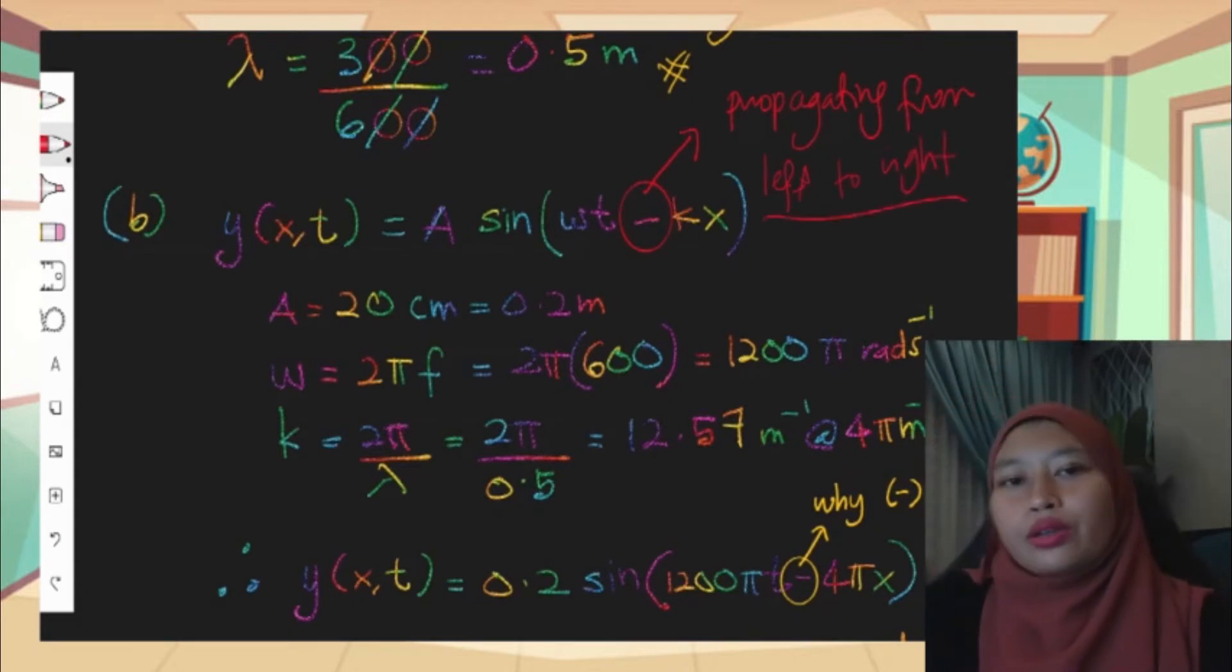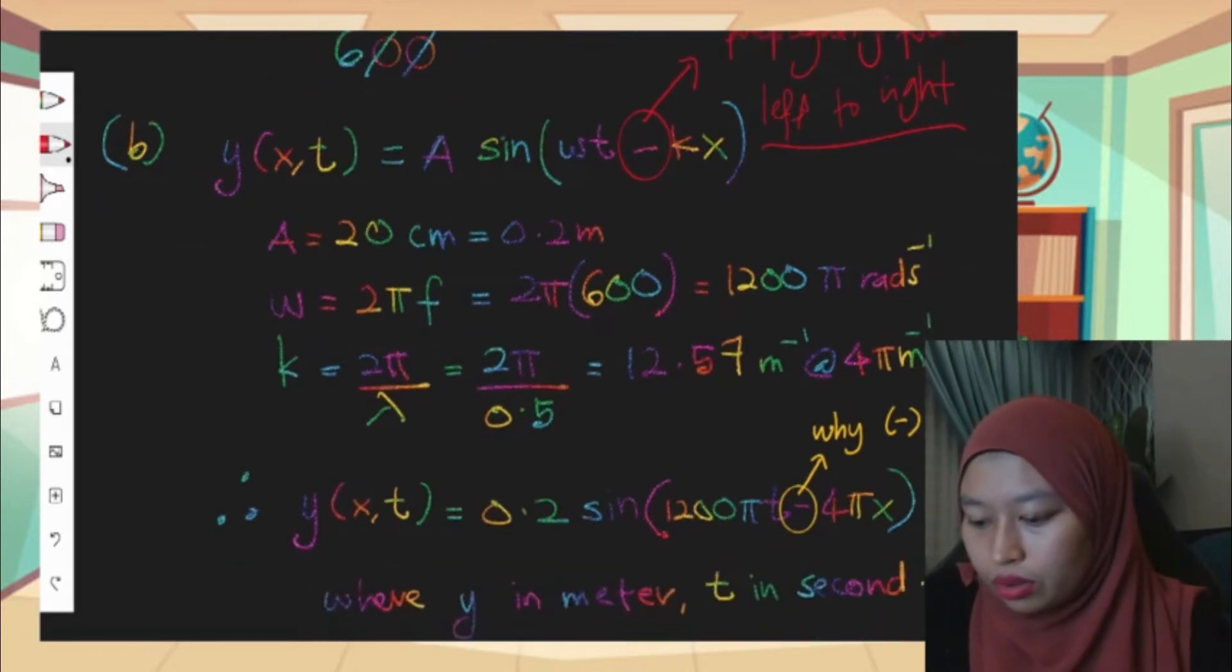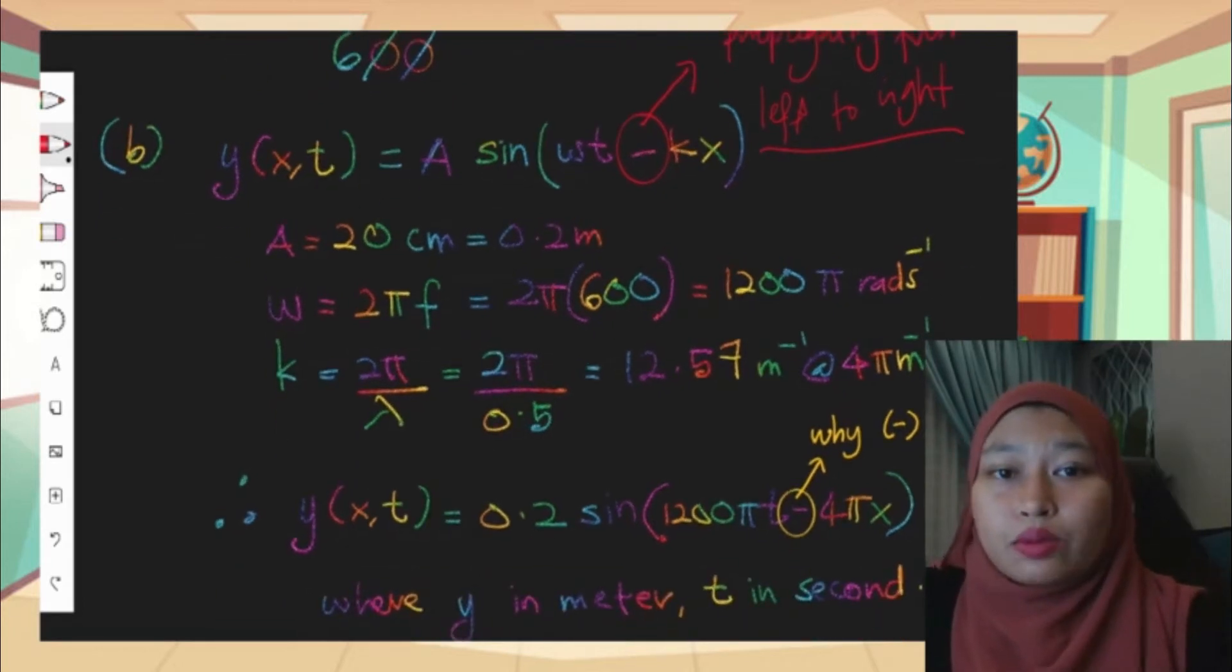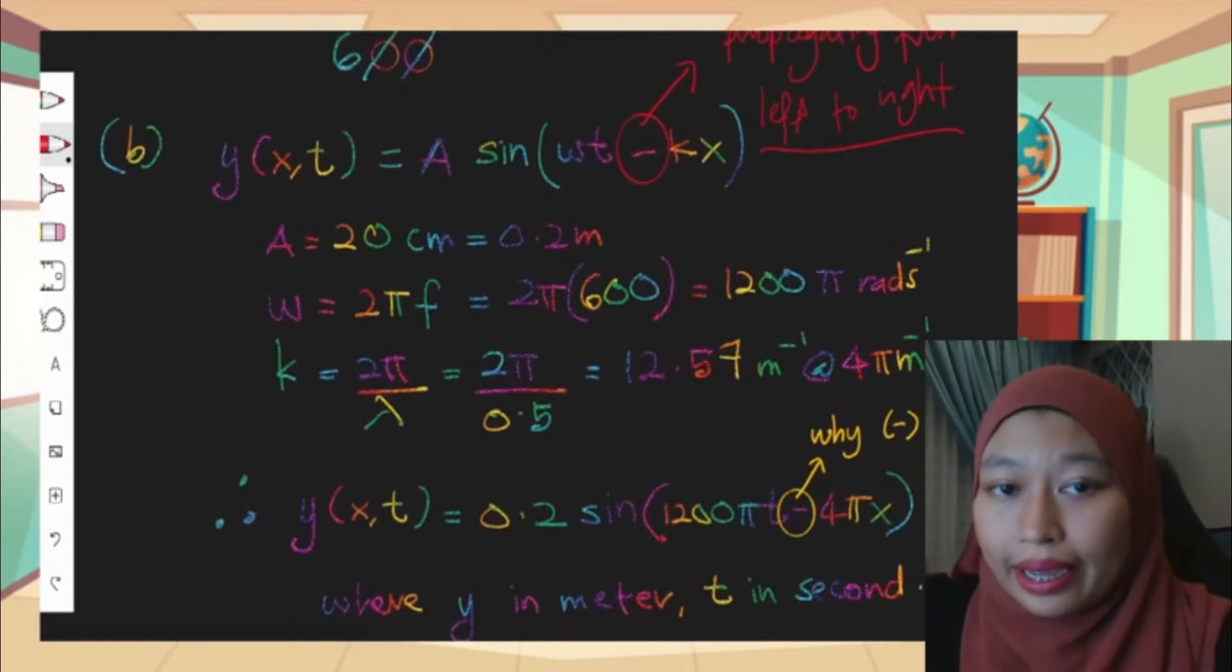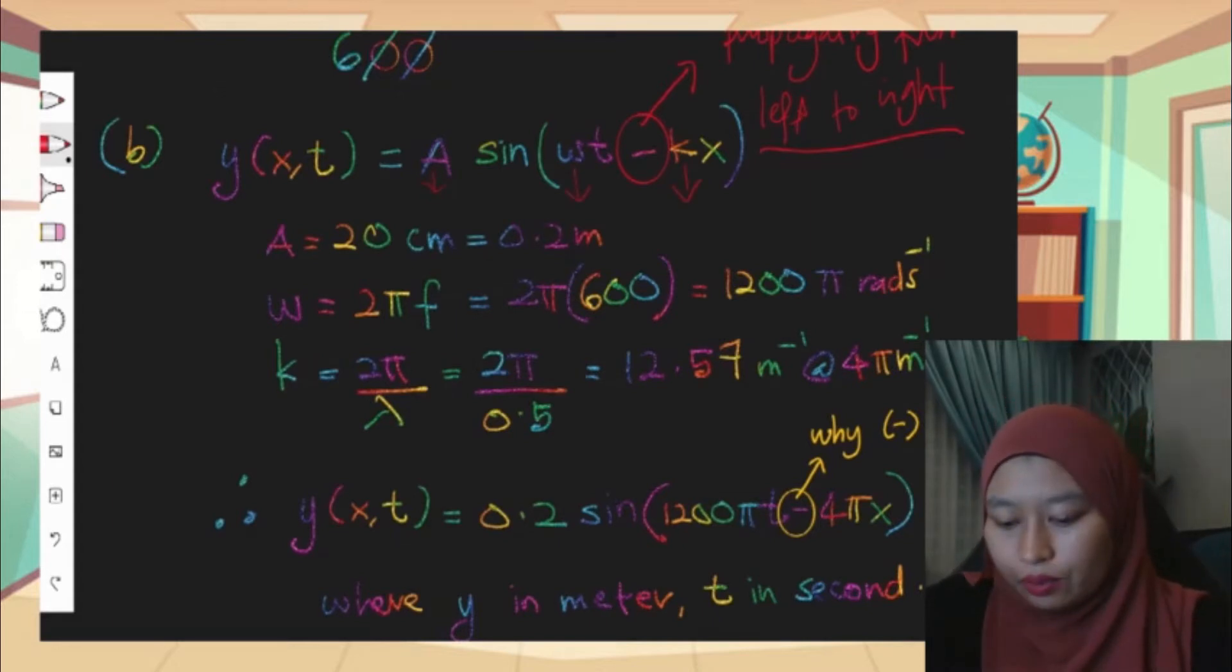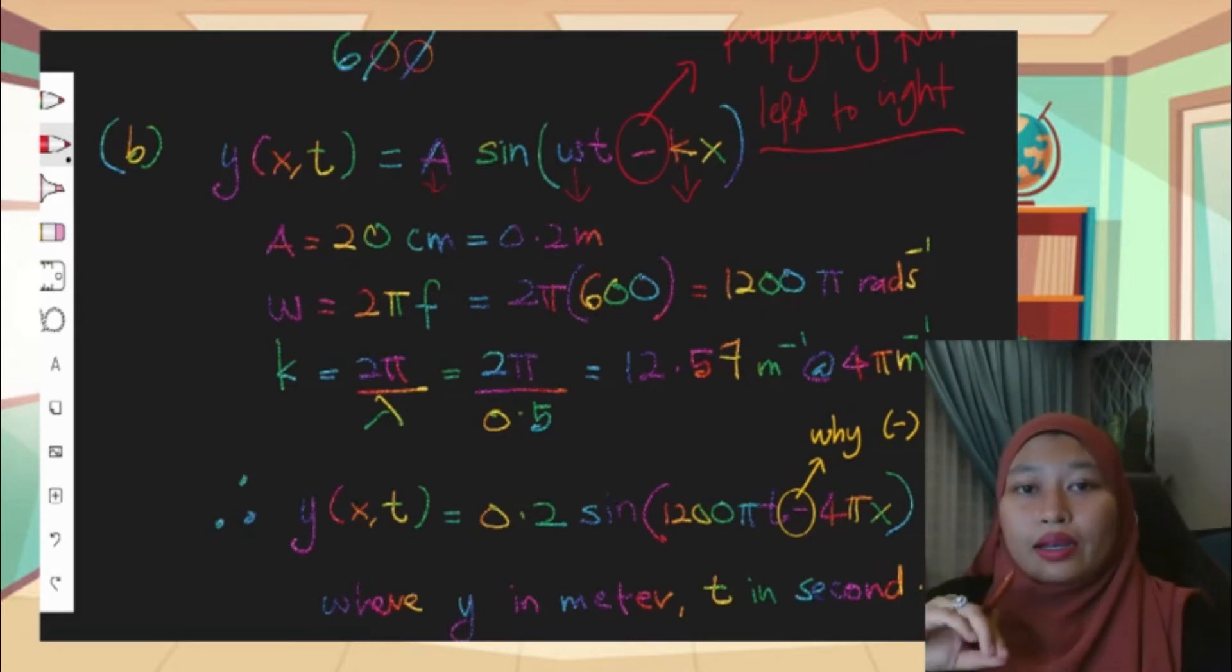Since we know it will be negative kx because of the word propagating from left to right, if the question said from right to left then it will become vice versa. Knowing the general equation is y equals A sine omega t minus kx, obviously we need to find what's the value for A, what's the value for omega, and what's the value for k.